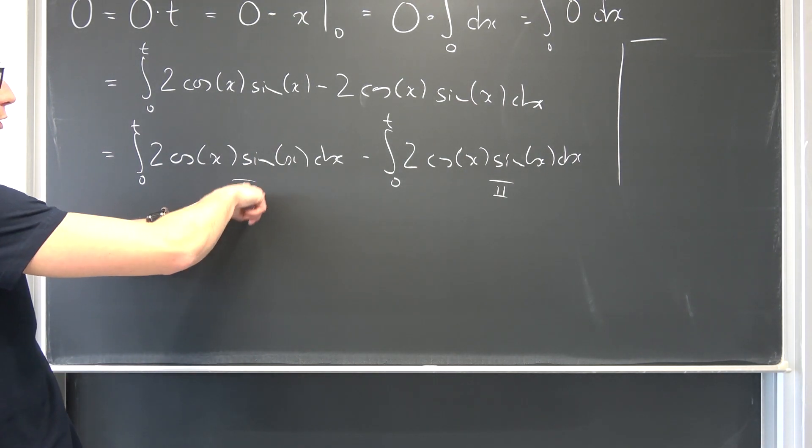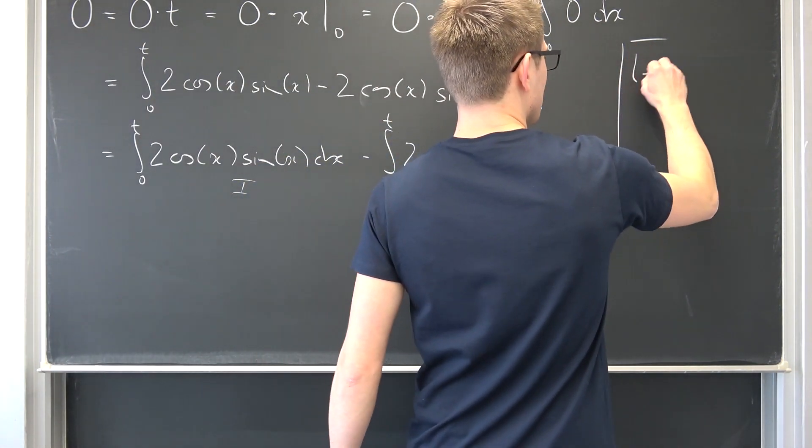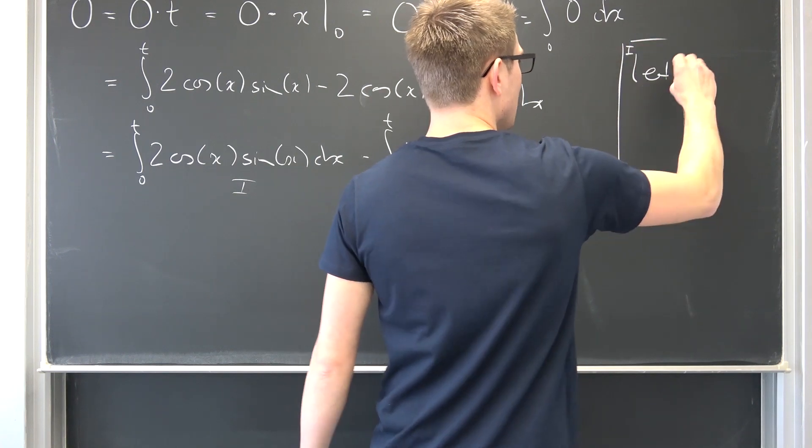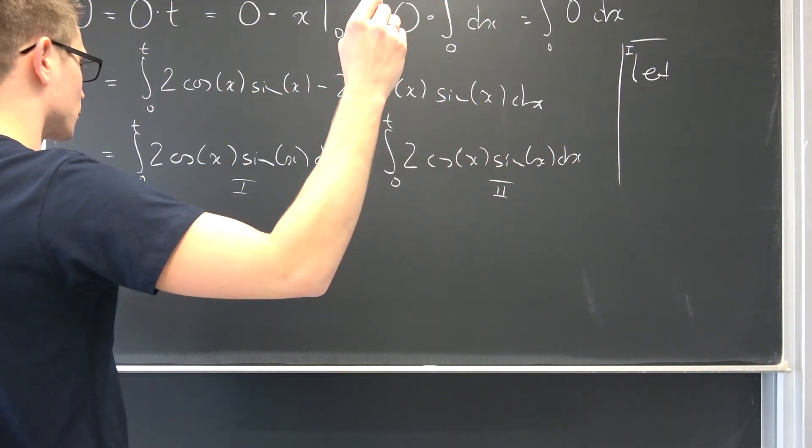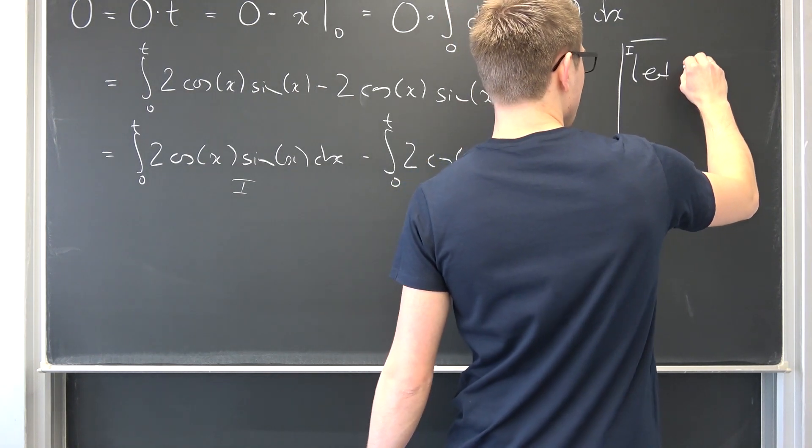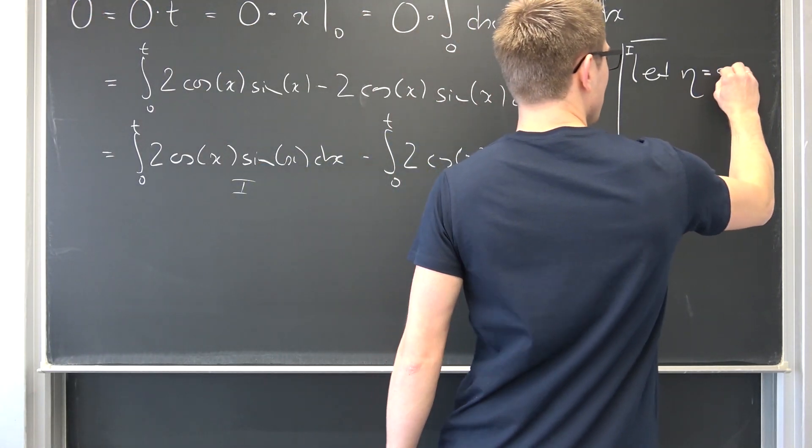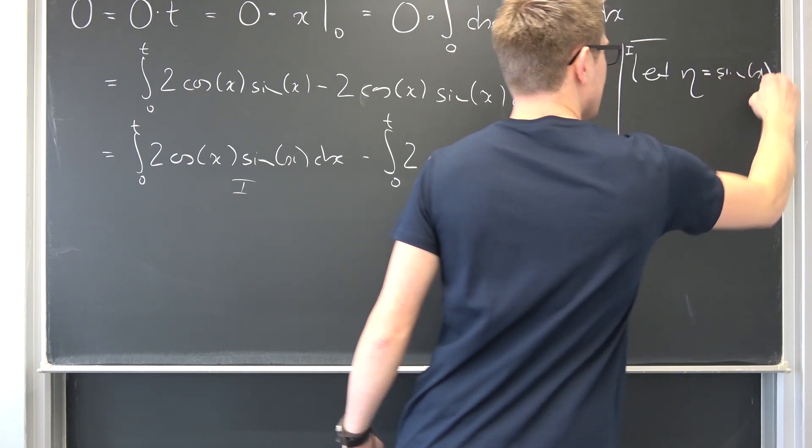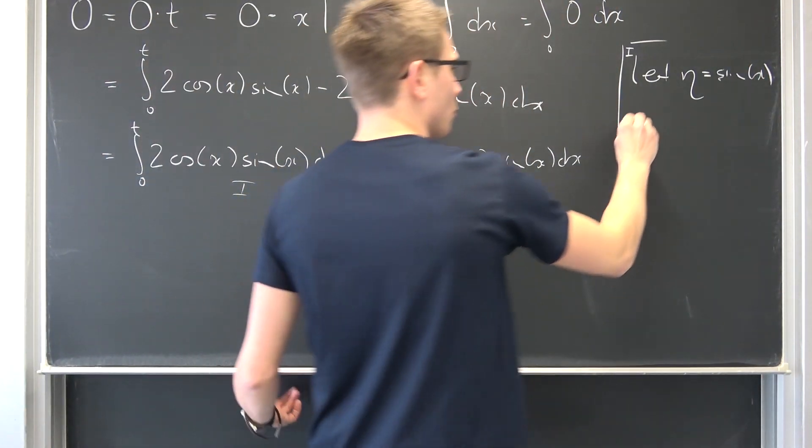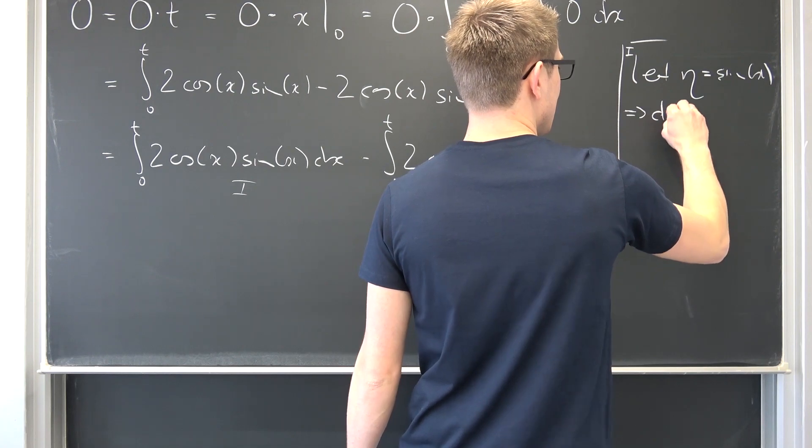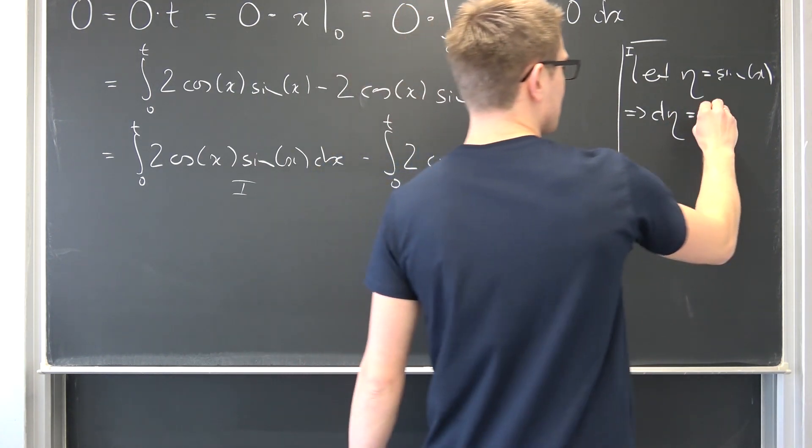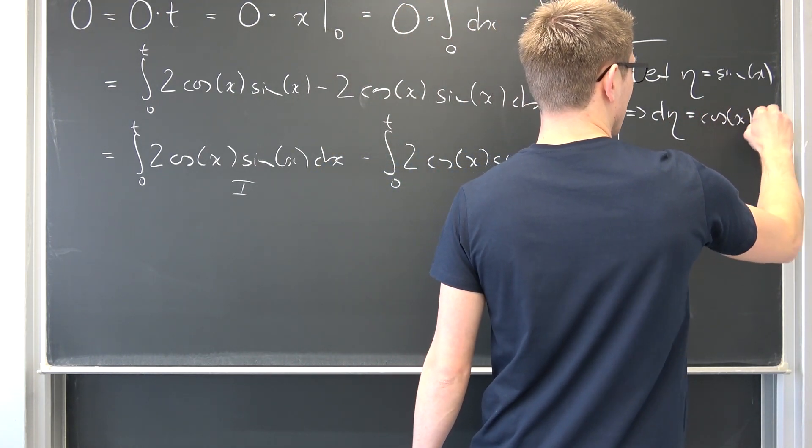Let's say on the first integral, number 1, let eta be equal to the sine of x. Then that means that if we differentiate both sides, then d eta is nothing other than the cosine of x dx.